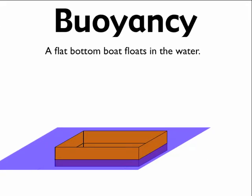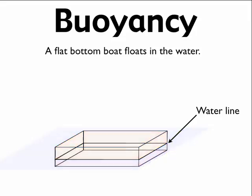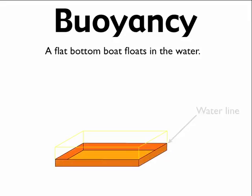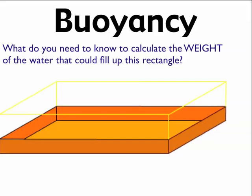Now let's look at what makes up the buoyant force. Say we have a rectangular box — our boat — floating in the water. The box has a waterline that separates the part underwater from the part above. If I simplify and enlarge the drawing, I need to figure out how much weight of water can fill inside the piece of the box that's underwater — underneath the waterline.